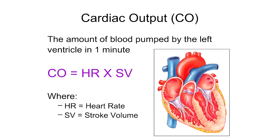What I want to do with this video is start talking about cardiac output. Cardiac output is a measurement that's calculated often clinically because it gives us information about how the heart is actually functioning. It's the amount of blood pumped by the left ventricle in one minute — the amount of blood being pushed into the systemic circuit in a minute's time, going out to the tissues of the body to provide oxygen and nutrients.